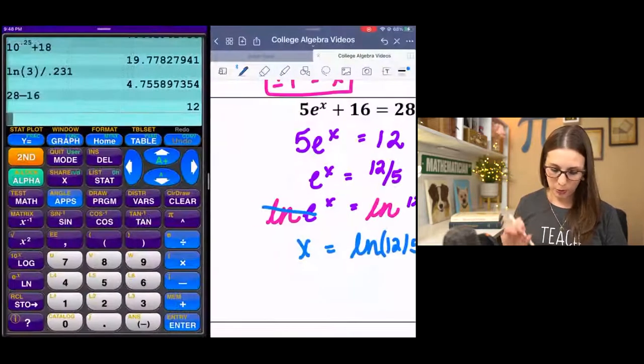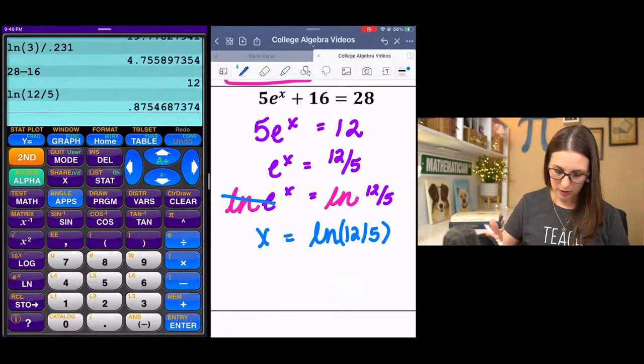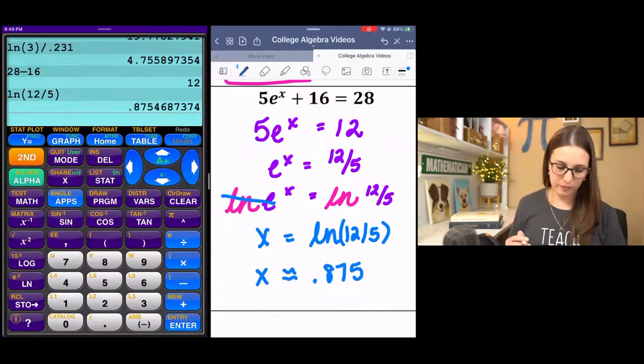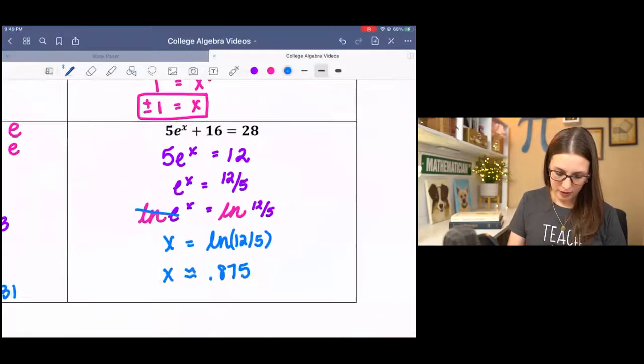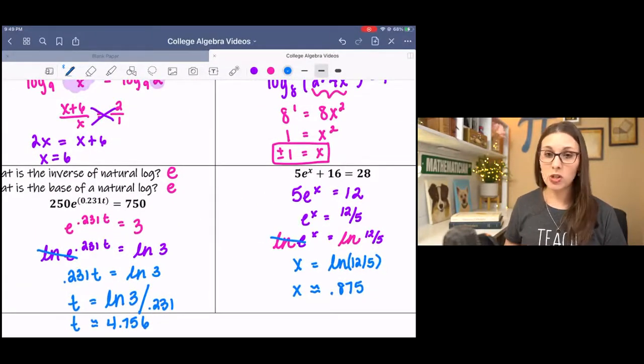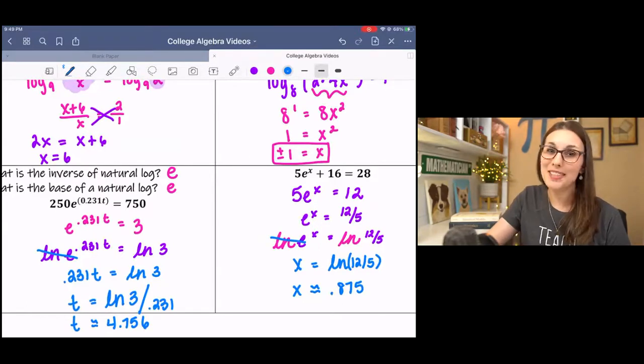And if it doesn't, then go find a friend. 0.875. That is solving exponential and logarithmic equations when they have different bases. I hope you enjoyed it. If you have any questions, please let me know and I'd be happy to help. See you in the next one.